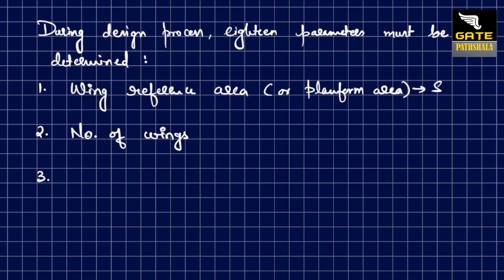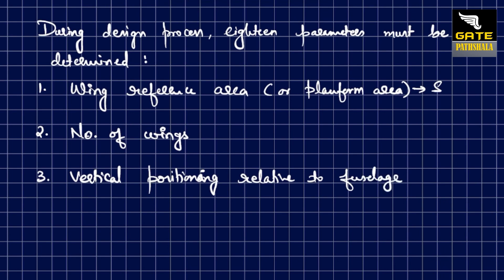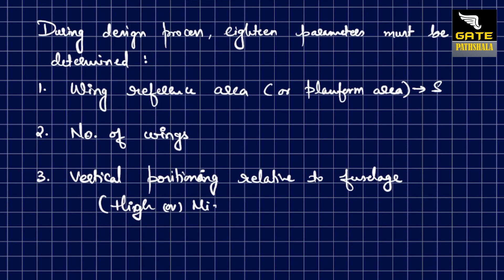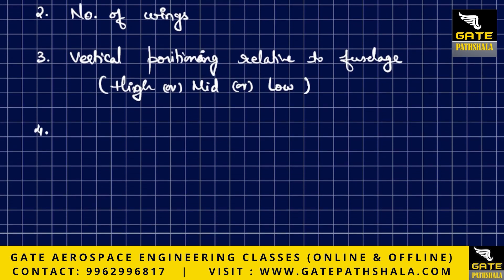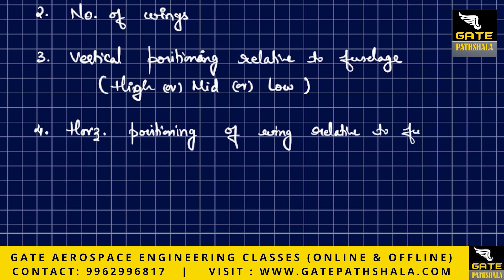Another parameter is the vertical positioning of the wing relative to the fuselage — for example, whether you want a high wing, mid wing, or low wing. Then there is the horizontal positioning of the wing relative to the fuselage.